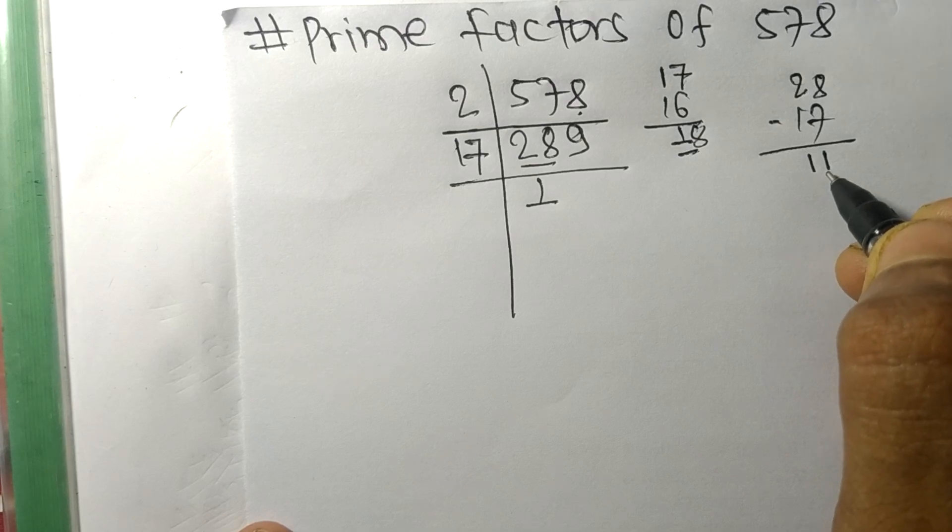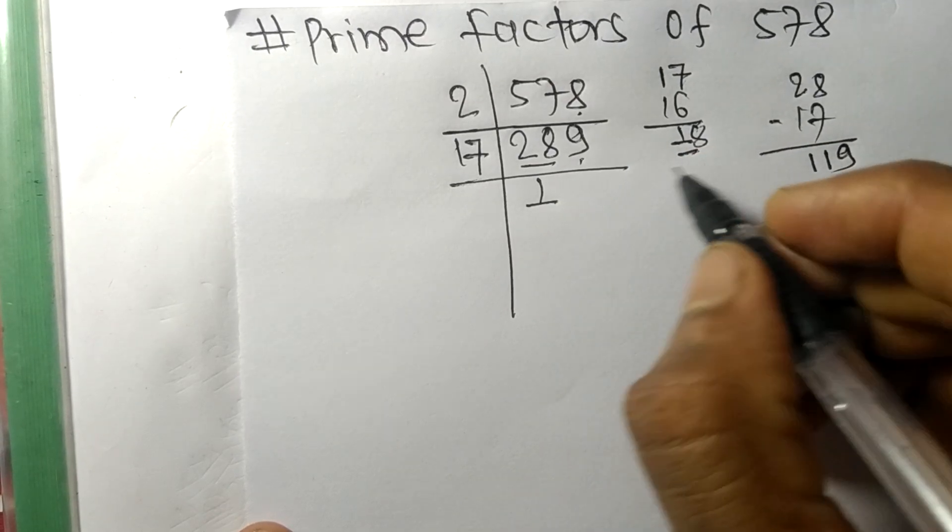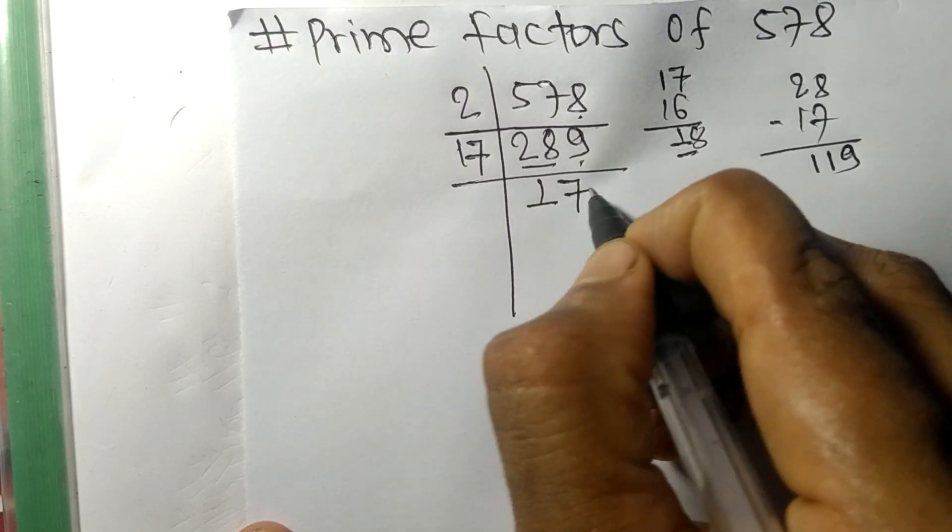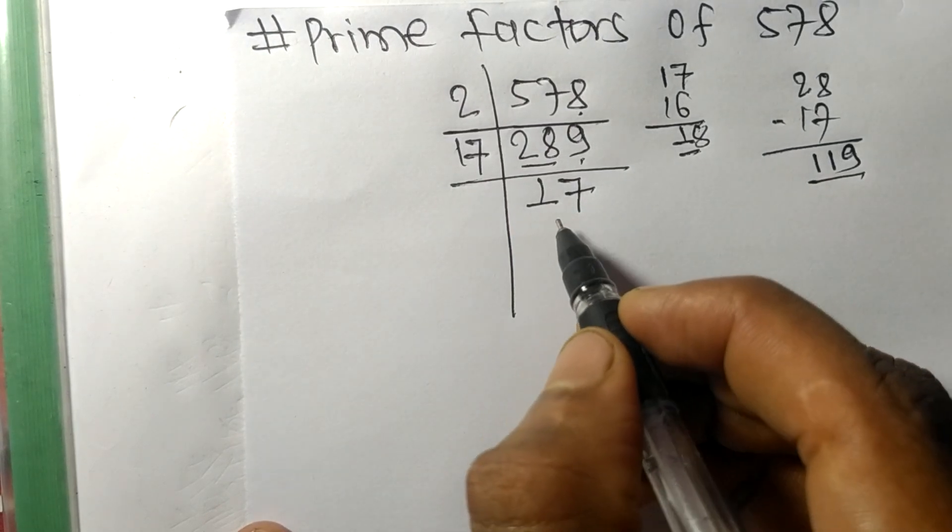When we keep there 9, 17 times 7 means 119. So now we got 289 divided by 17 equals 17.